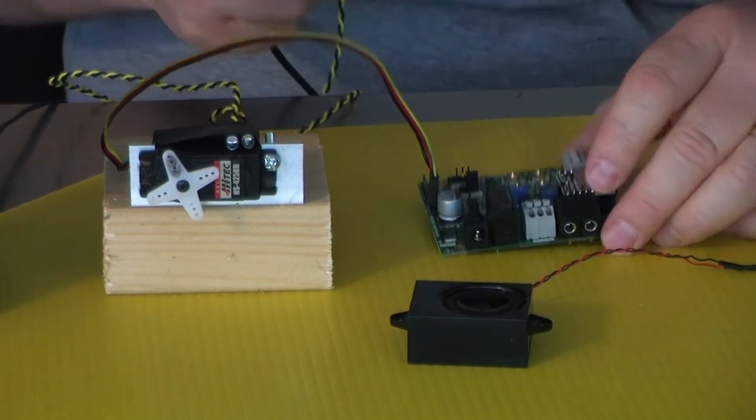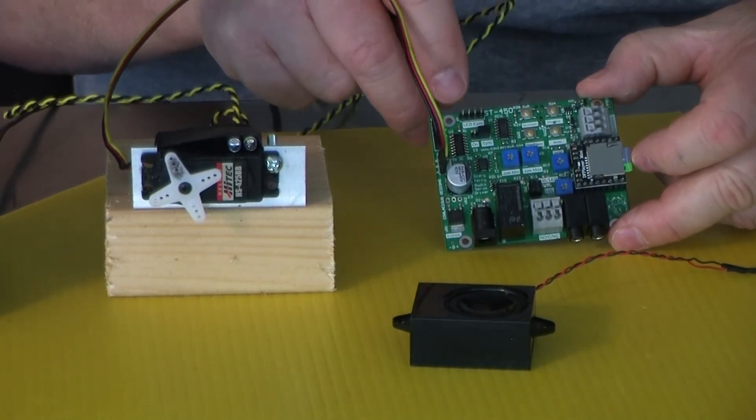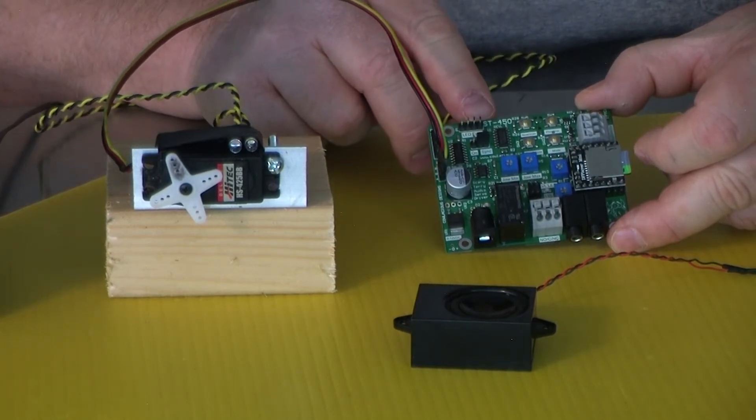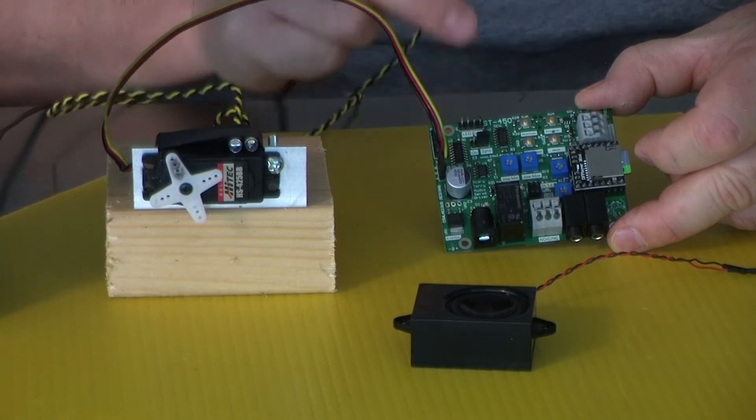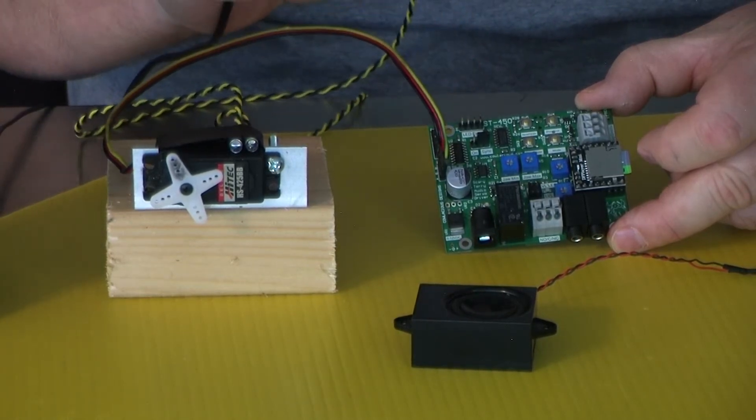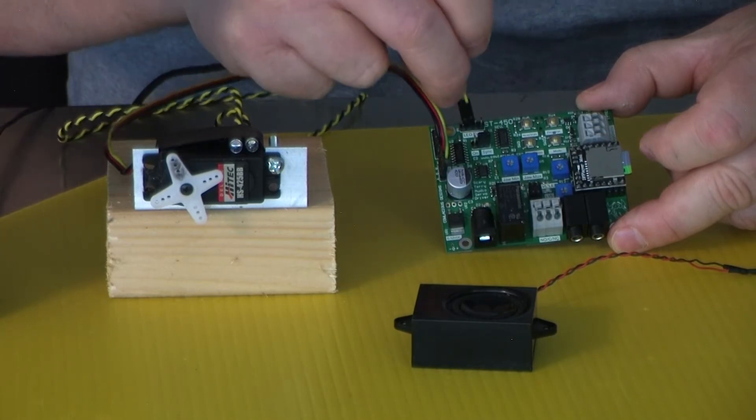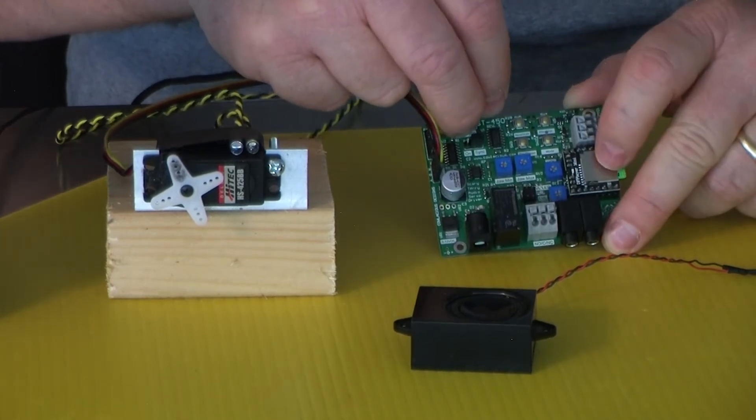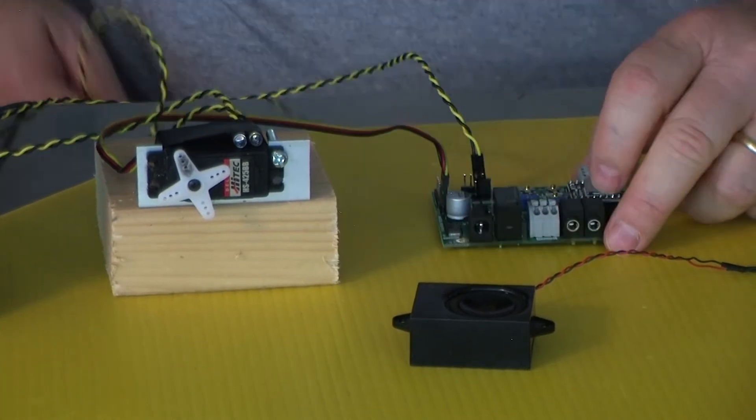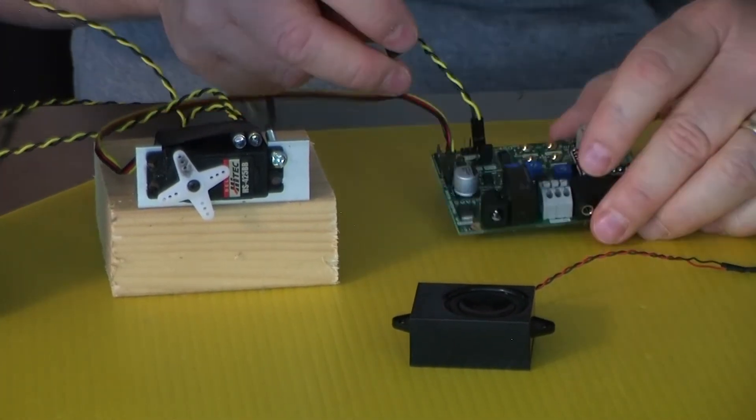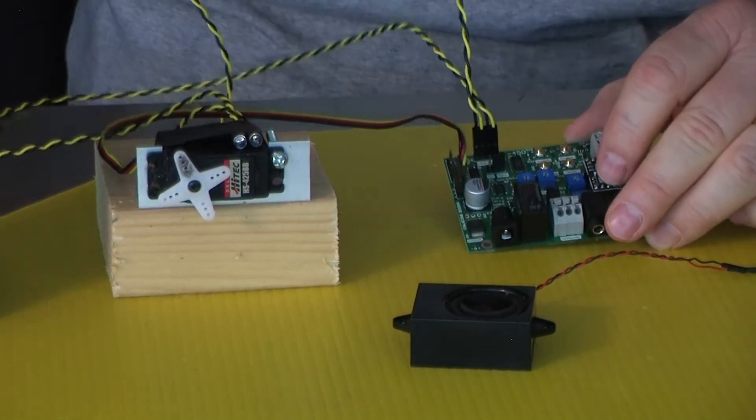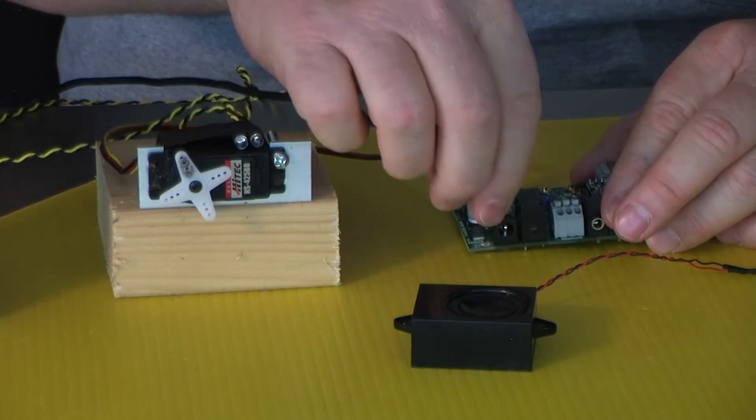And then for the LED eyes, we have a header up here with 4 pins, and up above it it has plus, minus, plus, minus. The yellow wire on the cable is supposed to go to the plus and the black to the minus. So I am going to plug that one on, and then I will plug the next one on. And then we are ready to power it up.